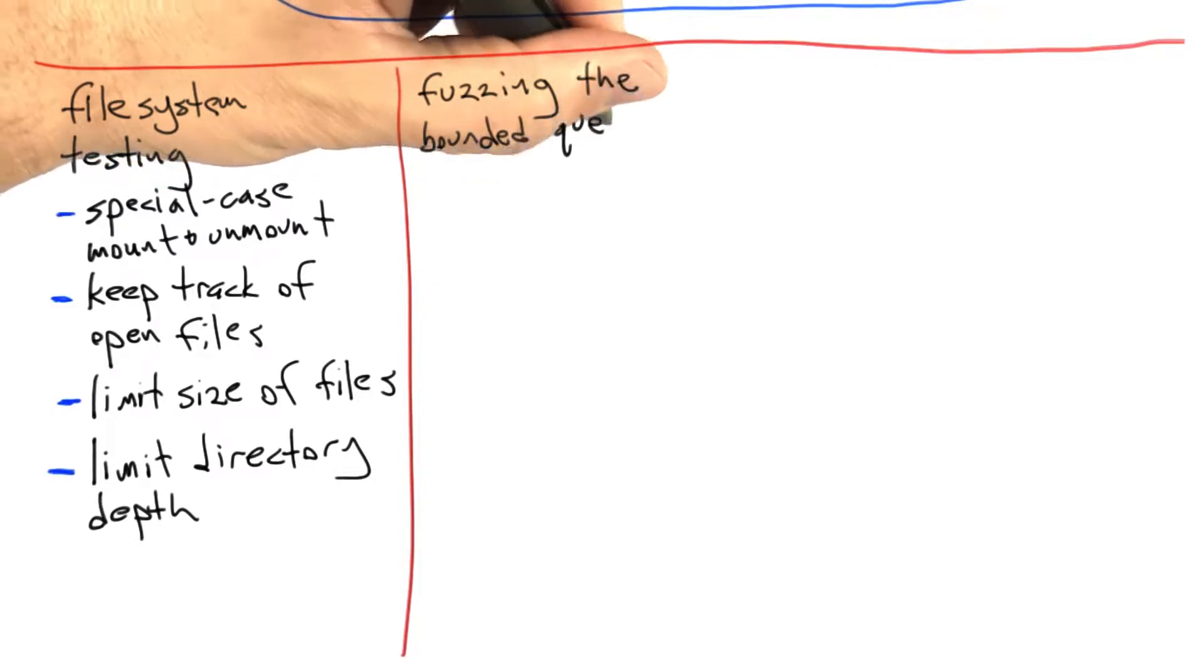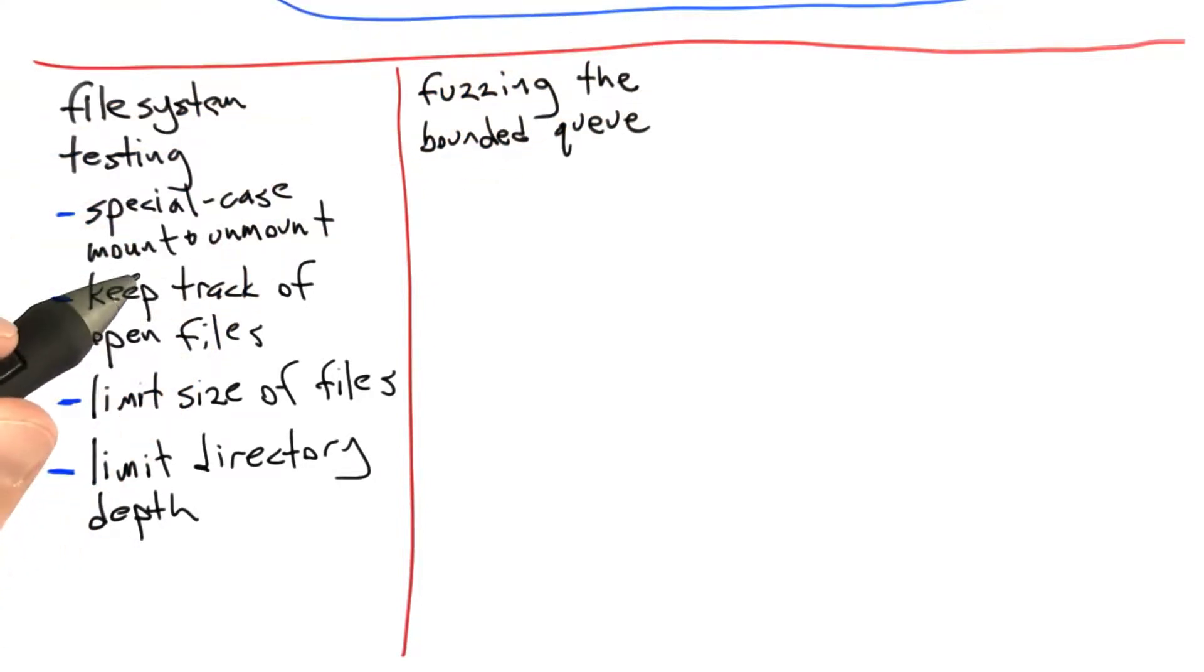Let's look at another example, and this time we'll be quite a bit more specific. So we already wrote a random tester for the little bounded length queue data structure.